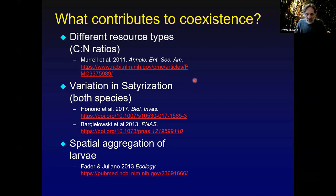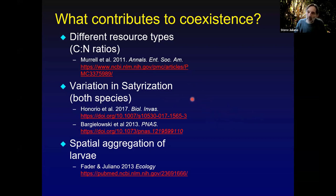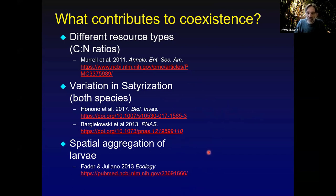Phil Lounibos and his co-workers have found variation in satyrization potential in both species, where some populations of Aedes aegypti are resistant to satyrization, particularly after they encounter albopictus. And some populations of Aedes albopictus are not very good at satyrizating Aedes aegypti. Spatial aggregation of larvae across containers is another mechanism by which these species may have an enhanced likelihood of coexistence in some locations.